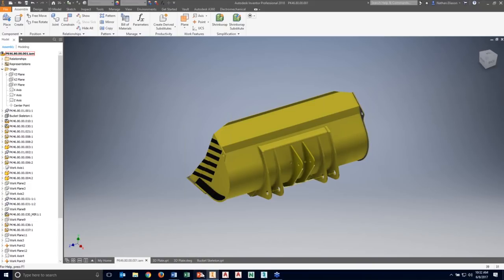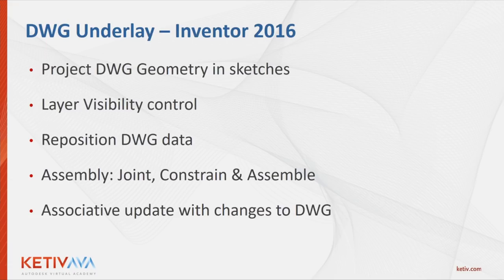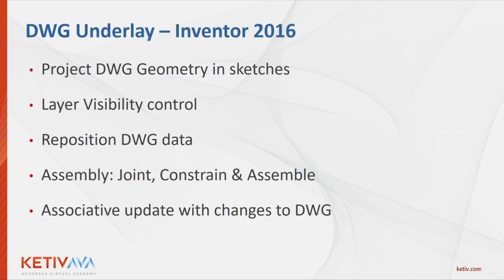Let's go back to the PowerPoint. I want to reiterate what capabilities are available depending on which version of Inventor you're using. With Inventor 2016, that's when the Project DWG Geometry command was added in the sketch environment — available in 2016 through 2018. You can control visibility of layers, reposition the DWG, and in assemblies create joints, constraints, and assemble commands referencing the DWG geometry. It's associative when you make changes to the DWG back in your Inventor model.